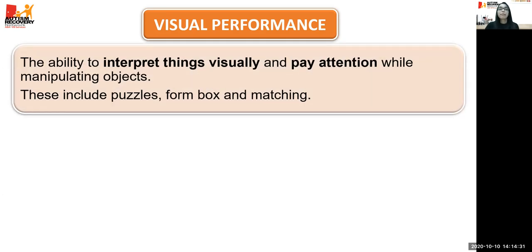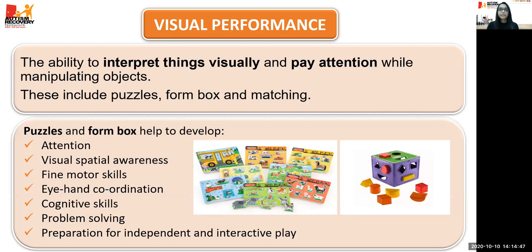Visual performance is the ability to interpret things visually and pay attention while manipulating objects. These include puzzles, form box, and matching activities. Puzzles and shape sorters help develop compliance, attention, and visual-spatial awareness. When the child fixes a puzzle or puts a shape in the shape sorter, it helps improve fine motor skills, eye-hand coordination, and cognitive skills.